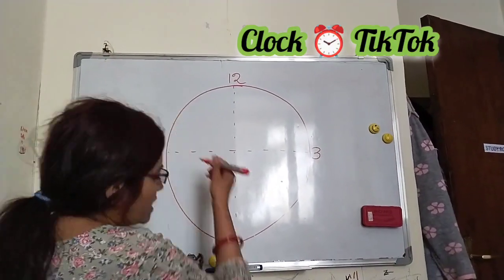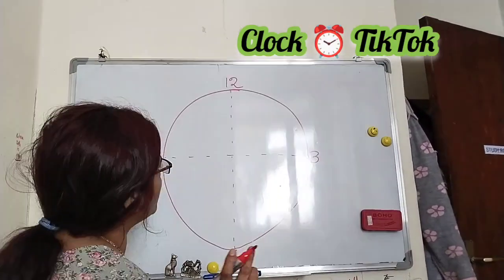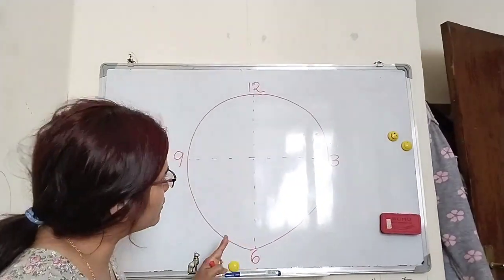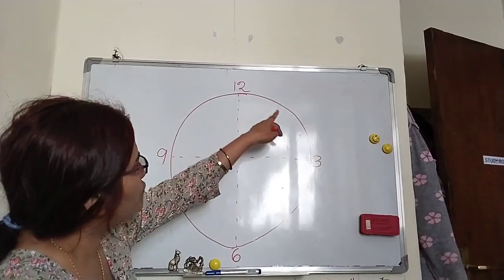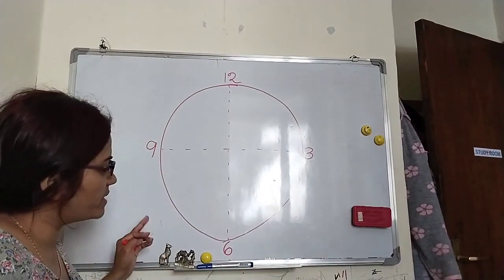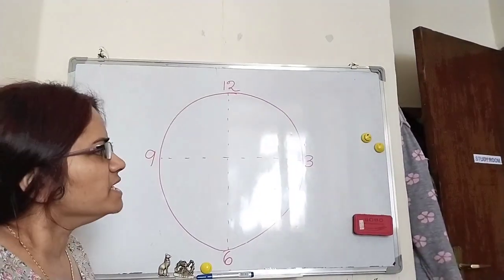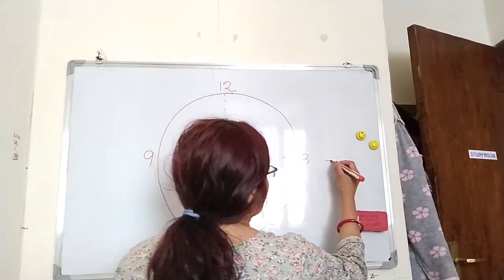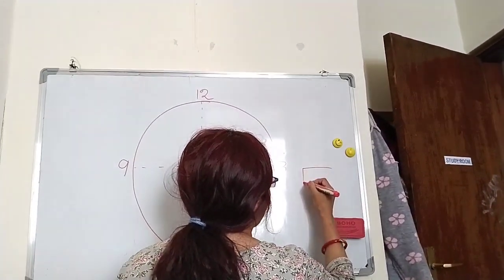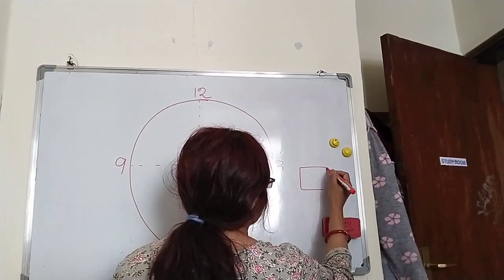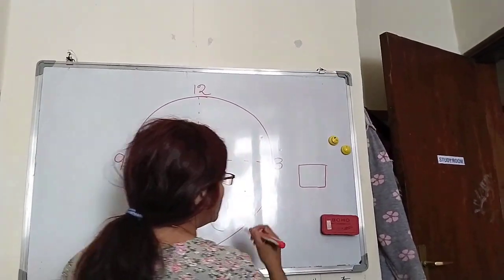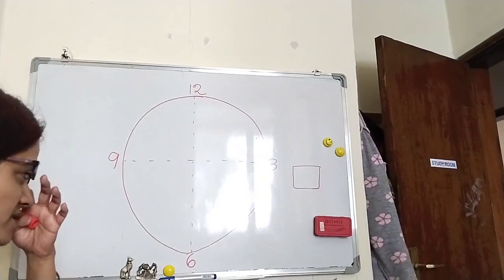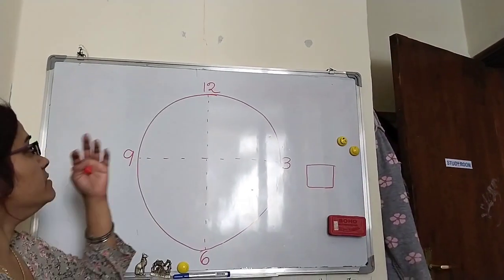Today we will learn the clock. How do we draw a clock? First, we have to make a circle. You can also draw a square because we have clocks in square shape too. The shape is not necessary.